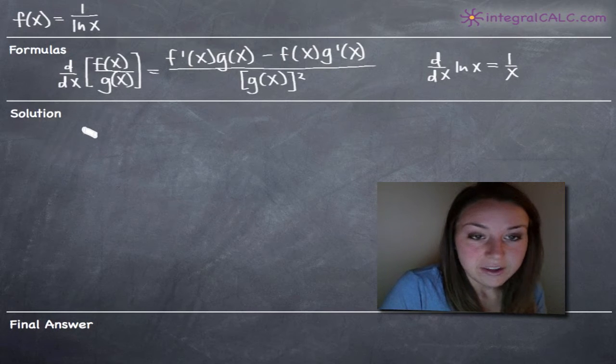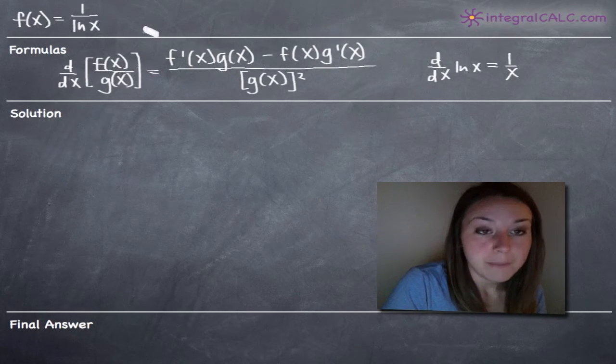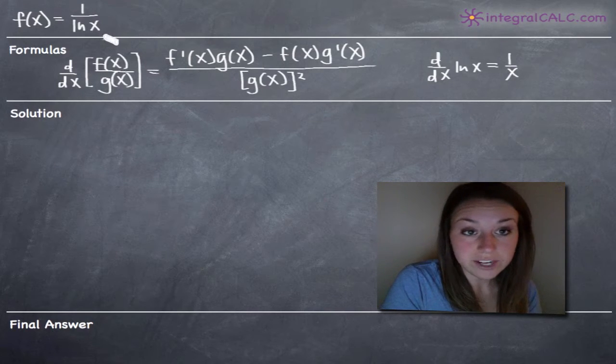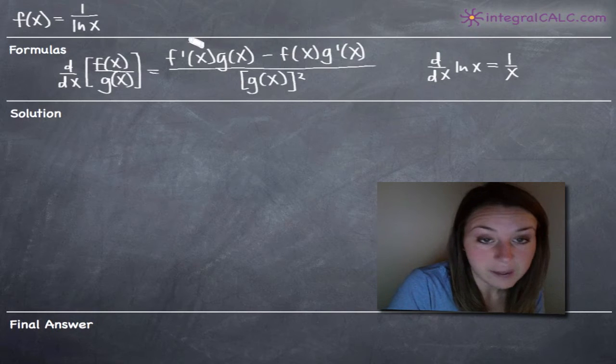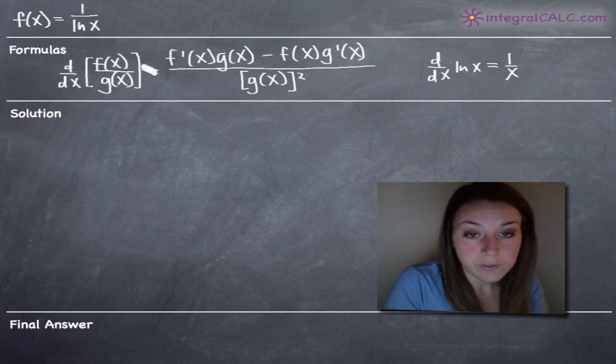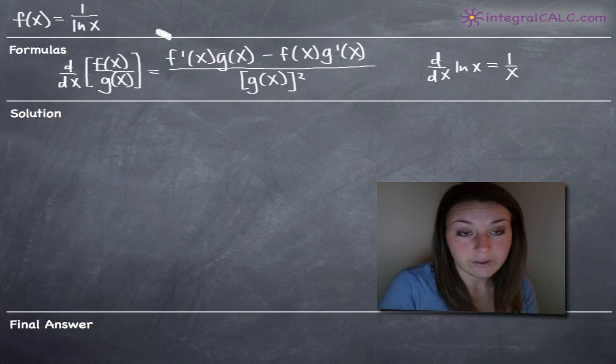We're going to need the quotient rule formula here that I've written because our function is a fraction. 1 is the numerator, natural log or ln of x is the denominator. The quotient rule formula tells us how to take the derivative of something when we're dealing with a fraction.